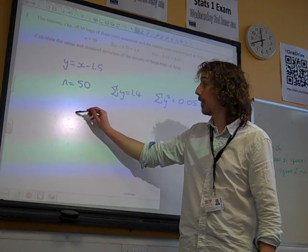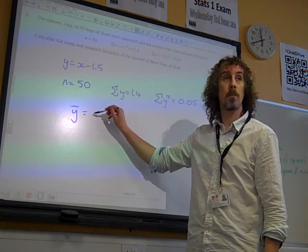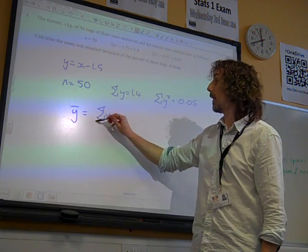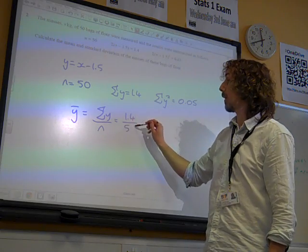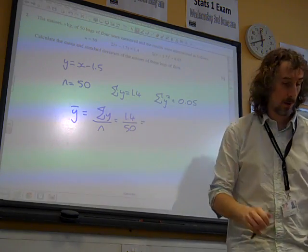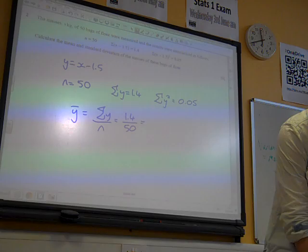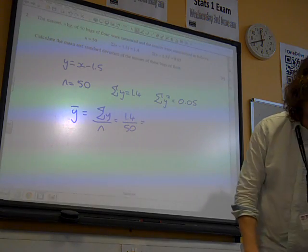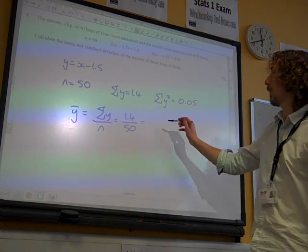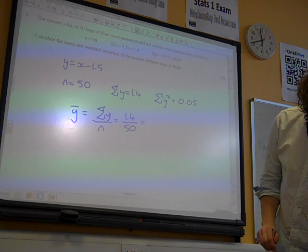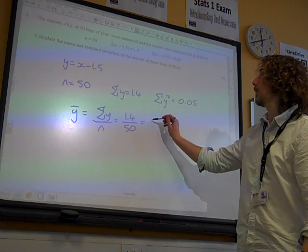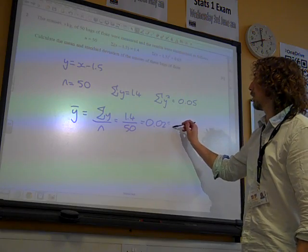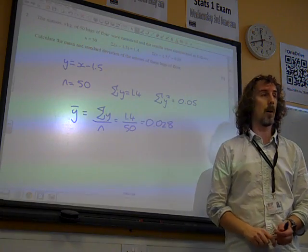So the mean of y, y bar, is sigma y over n. So that is 1.4 over 50. So we get 7 over 250, or, what is that? 0.028, of course it is. Okay, so that's y bar, the mean of y.